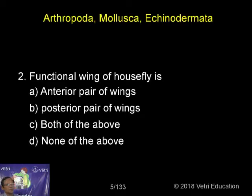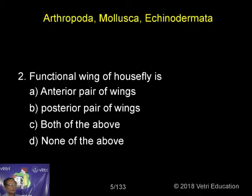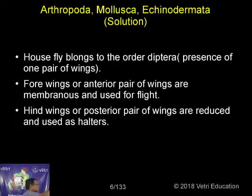Insects are normally classified based on the nature of their wings. In most cases, we have a pair of forewings and a pair of hind wings. In the case of the housefly, the forewings are present but the hind wings are reduced to halteres. So the functional wings are nothing but the first pair of wings.